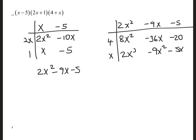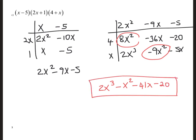My final answer: I start with 2x cubed, then I combine the x squared terms to get negative x squared, then minus 41x, and then minus 20.